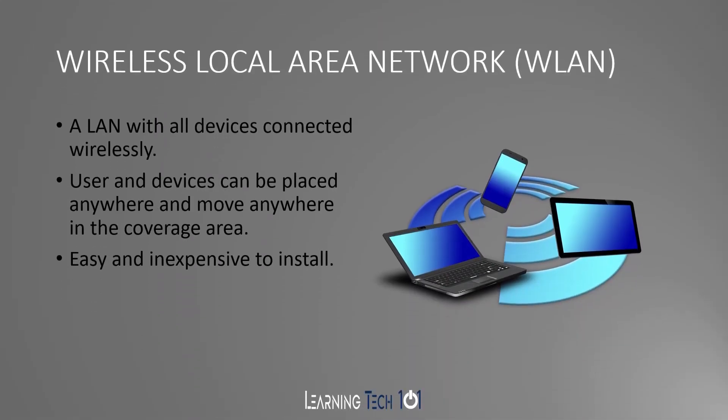Next, we have your wireless local area network. This is going to be a LAN with all devices connected wirelessly. Users and devices can be placed anywhere and move anywhere in this coverage area. They're easy and inexpensive to install. Most houses, even though we talked about them being a local area network, are actually really going to be wireless local area networks, because you'll have more devices connected using Wi-Fi than physically cabled into your router.